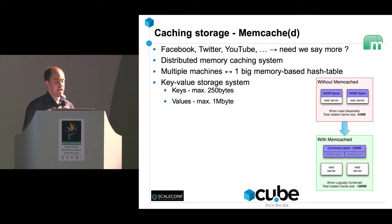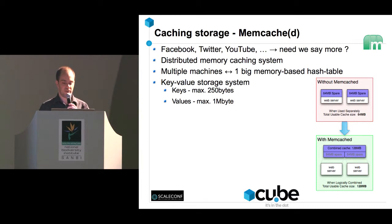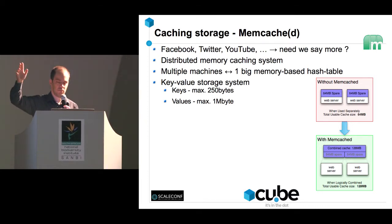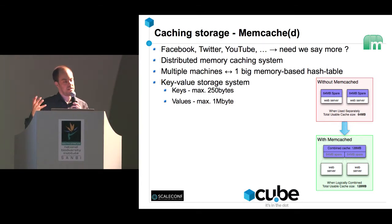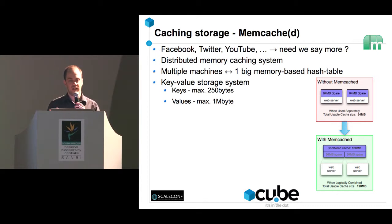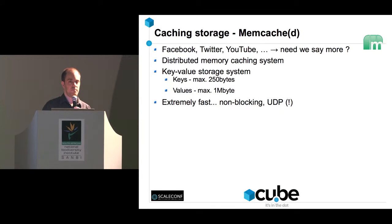Whether using disk or RAM disk, you're storing everything locally, so if you have five web servers you have five local caches — how do you keep them synchronized? There's a better solution: a memory caching system called memcached. It's used by very big companies. It's a distributed memory caching system, meaning if you have two servers with 64 gigabytes of spare memory it groups that together into 128 gigabytes and automatically spreads data across both machines. It uses a key-value system: keys up to 250 bytes, values up to 1 megabyte.